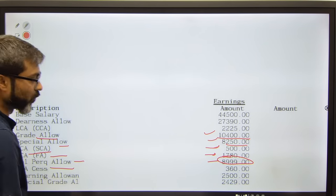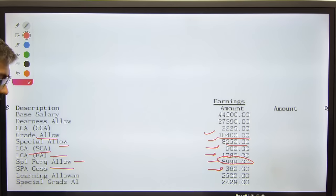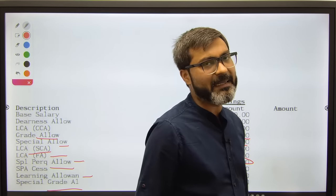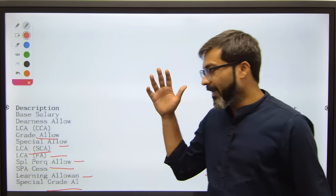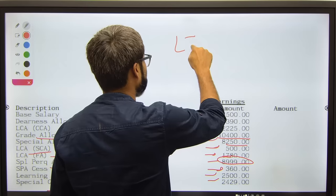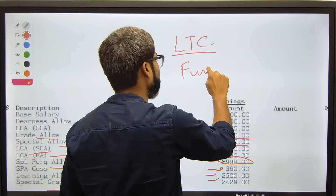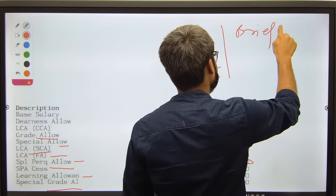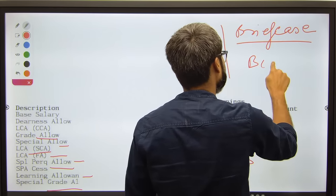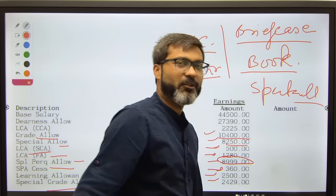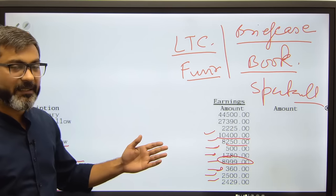You will also get special perquisite allowance - around nine thousand rupees. SPS is three hundred and sixty. Learning allowance is twenty-five hundred, and special grade allowance is two thousand four hundred and twenty-nine. Along with this, you'll get various annual allowances like leave travel concession (LTC), furniture allowance, briefcase allowance, book allowance, and spectacle allowance. Medical expenses will be deducted from your salary.